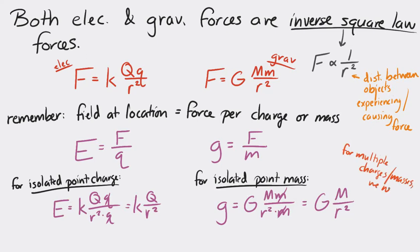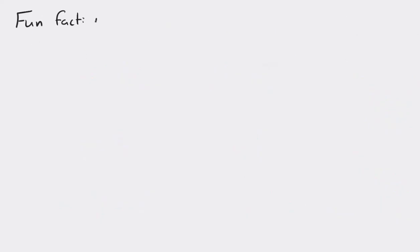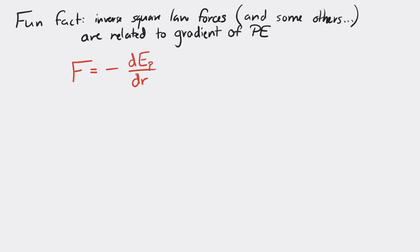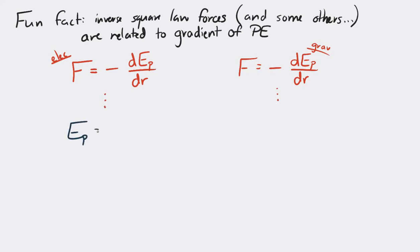Inverse square law forces are related to the gradient of the potential energy. The electric force equals the negative of the gradient of the electric potential energy, and the gravitational force equals the negative of the gradient of the gravitational potential energy. Using this, we can get expressions for electric and gravitational potential energy. There are many negative signs involved, and I won't go through all the arguments for why this is true.